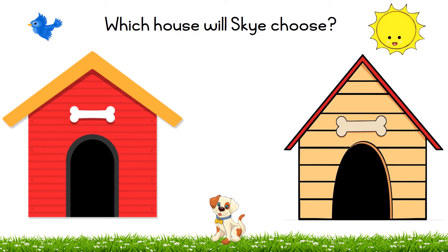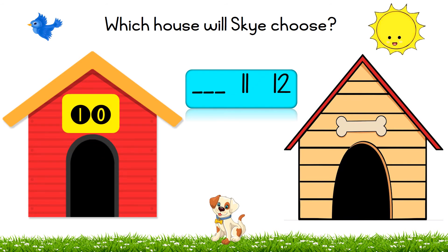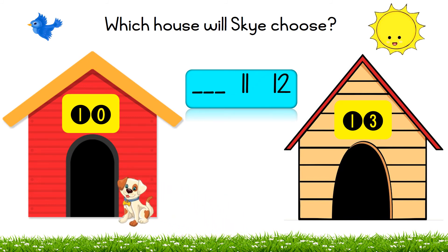Skye! Which house will Skye choose? Blank, eleven, twelve. Skye has to choose the house with the number that comes before eleven and twelve. Is it house number ten? Or is it house number thirteen? Ten! Very good! Skye chose ten because ten comes before eleven and twelve.